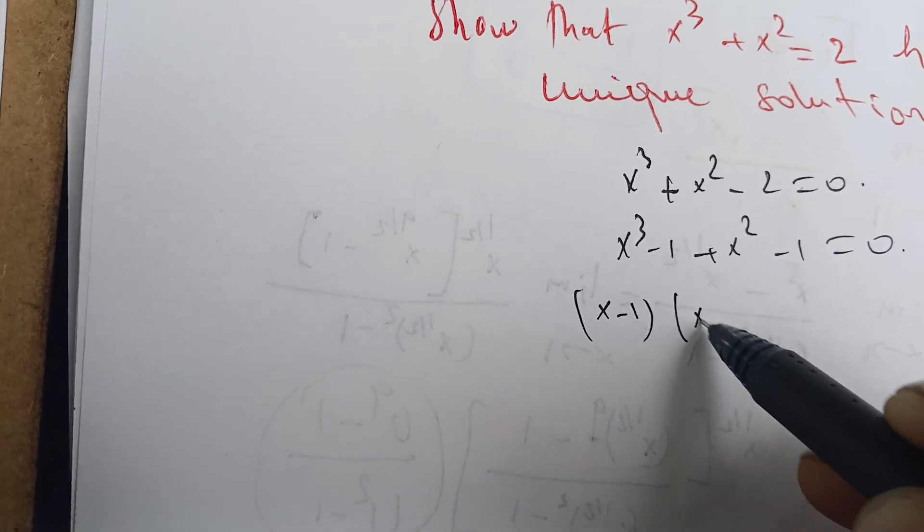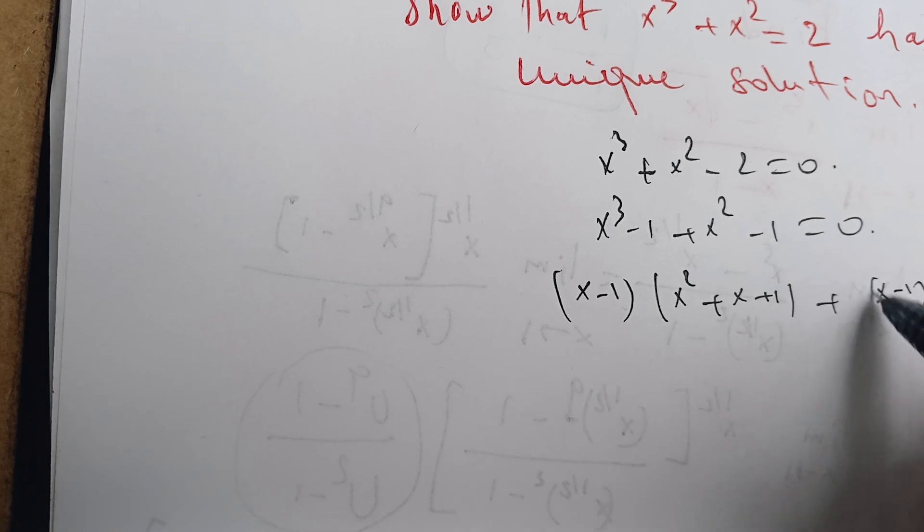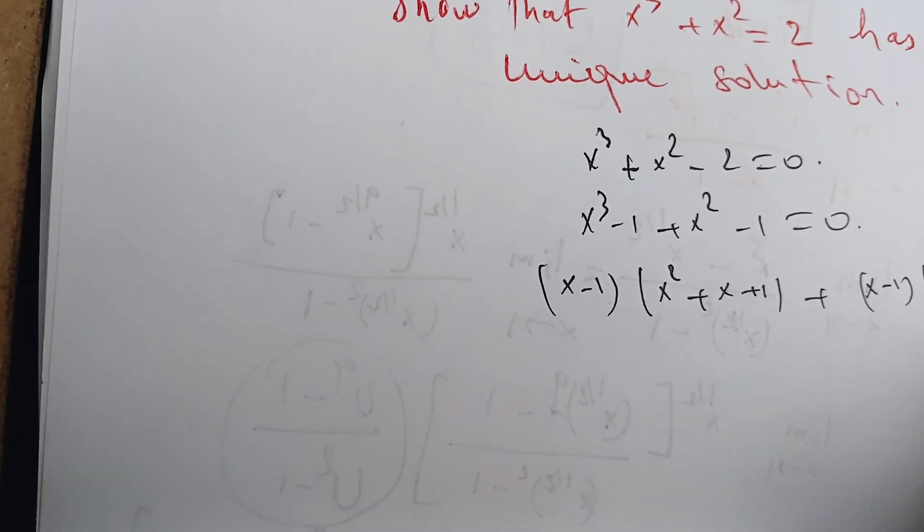Now we're going to use some factoring. This one is x minus 1 times x squared plus x plus 1, plus this last one which is x minus 1 times x plus 1 equals 0.